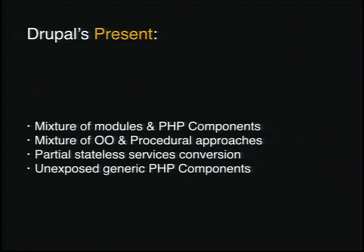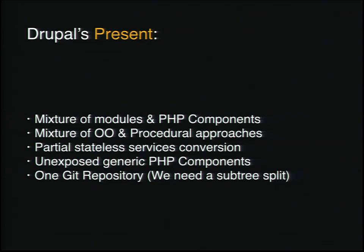We have a number of unexposed generic PHP components. During the Drupal 8 development cycle, we actually spent a lot of intent and a lot of time building up components that could be given back to the PHP community. There's an entire directory structure for this stuff inside of Drupal components namespace. Anything within that namespace is actually something that we would like to see publicly available to the rest of the PHP community at some point. In fact, there are two of these components that already have Composer JSON files in them, so if we were to do a subtree split inside of Drupal's repository today, we could begin serving at least two of those out to the rest of the PHP community.